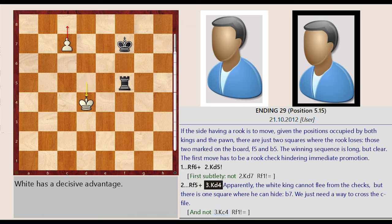Apparently, the white king cannot flee from the checks, but there is one square where he can hide, b7. We just need a way to cross the c-file.